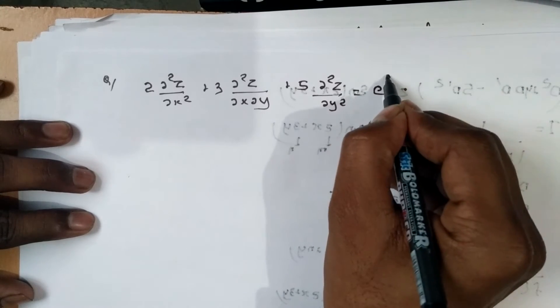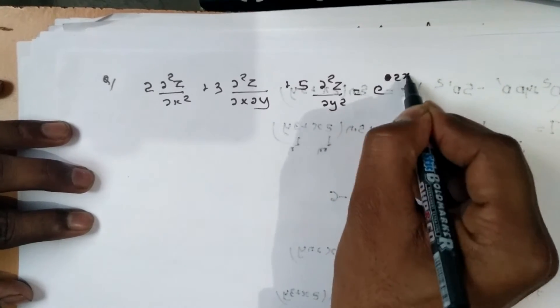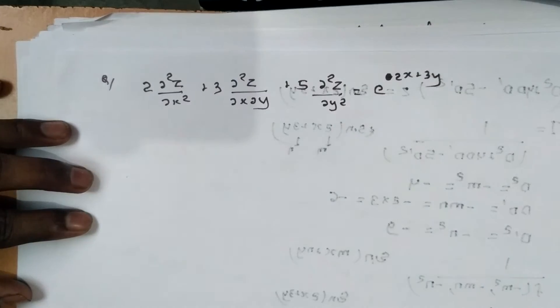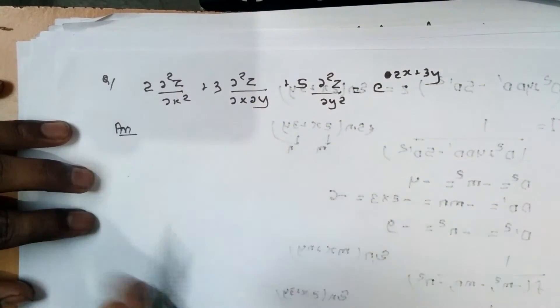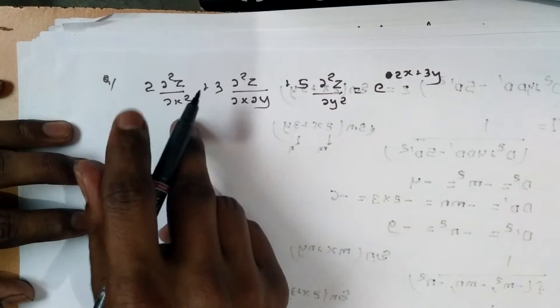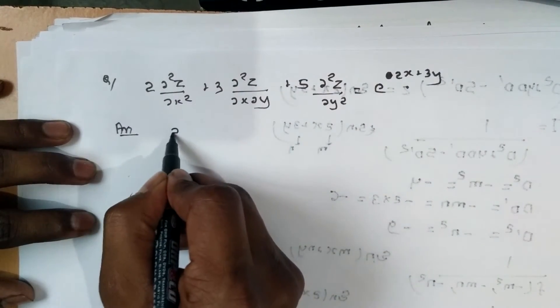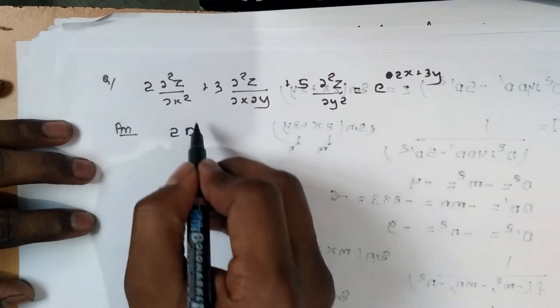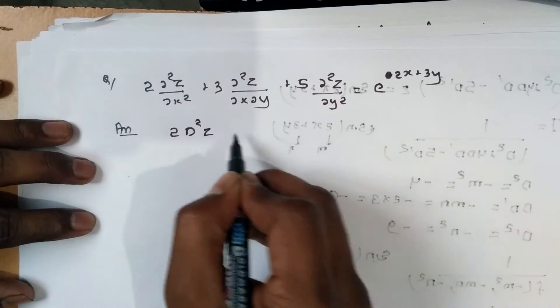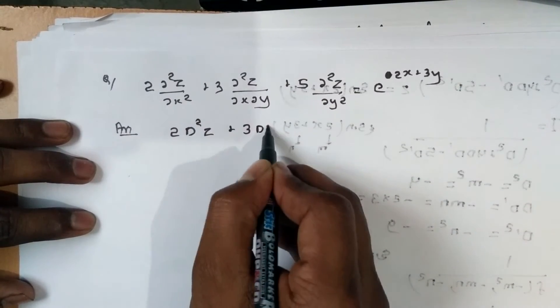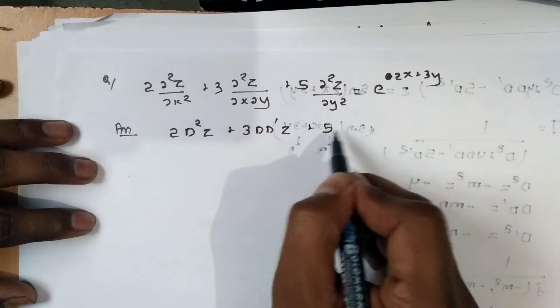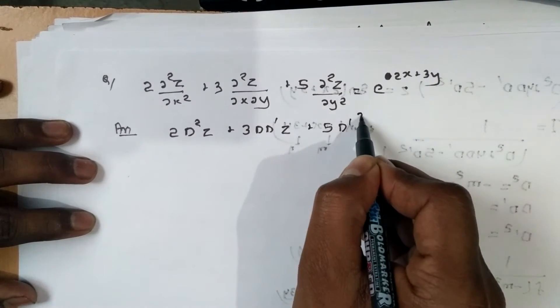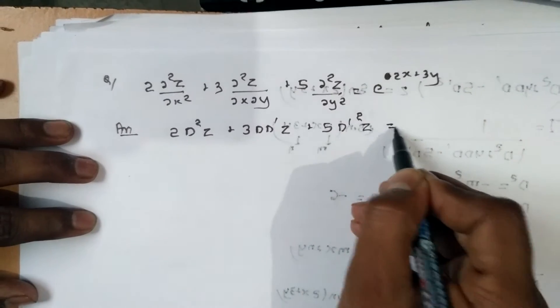First, we write the symbolic notation using D operators: 2D²z + 3DD'z + 5D'²z equals e^(2x+3y).